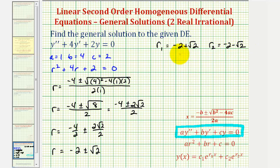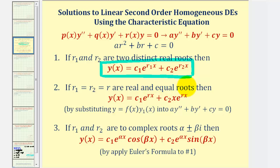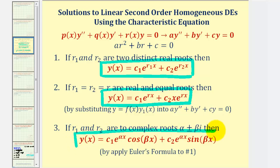Remember, the types of solutions to the characteristic equation determine the form of the general solution. For a quick review: if the characteristic equation has two distinct real roots, as in our case, we use this form for the general solution. If we had two real equal roots, the form includes an extra factor of x in the second term. And if the characteristic equation had complex solutions, we would use a different form entirely.